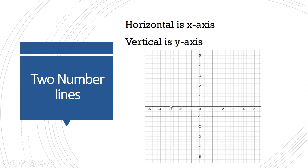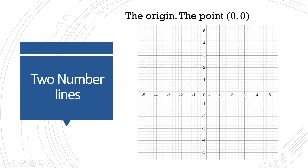It's two dimensions because we can go left and right — that's one dimension — and up and down — that's another dimension. So two number lines gives us two dimensions. Usually where they cross is the point called the origin, which is the point (0, 0), and that's the starting point every time I try to graph another point.